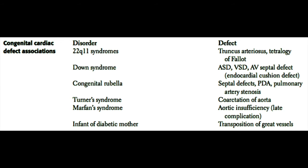There are multiple congenital diseases, both inherited and infectious, that can cause cardiac defects. Chromosome 22q11 syndromes can cause truncus arteriosus and tetralogy of Fallot. Down's syndrome is classically associated with atrial and ventricular septal defects, as well as an AV septal defect, which is an endocardial cushion defect also known as a primum ASD. Congenital rubella is commonly seen with septal defects, patent ductus arteriosus, and pulmonary artery stenosis. Turner syndrome is associated with coarctation of the aorta, Marfan syndrome with aortic insufficiency and aortic root dilatation, and diabetic mothers commonly have babies born with transposition of the great vessels.